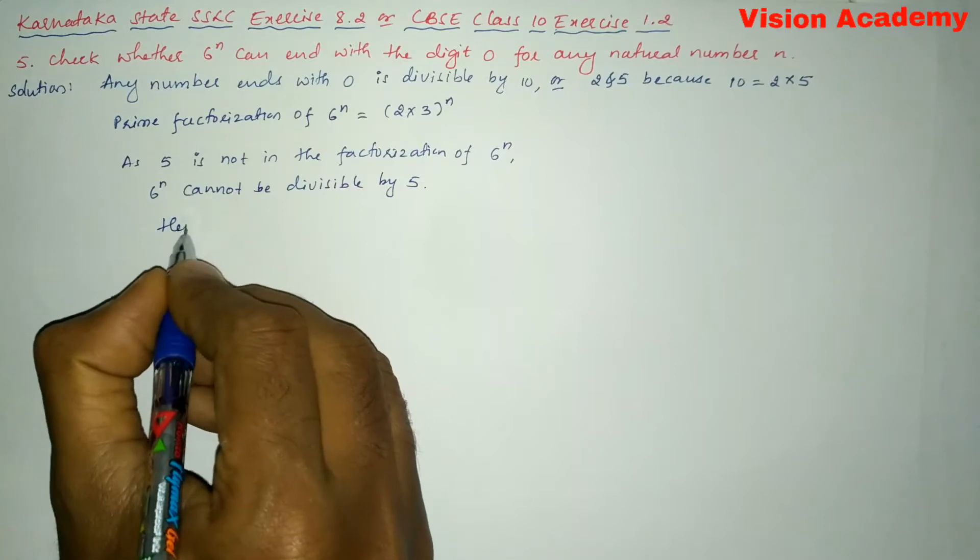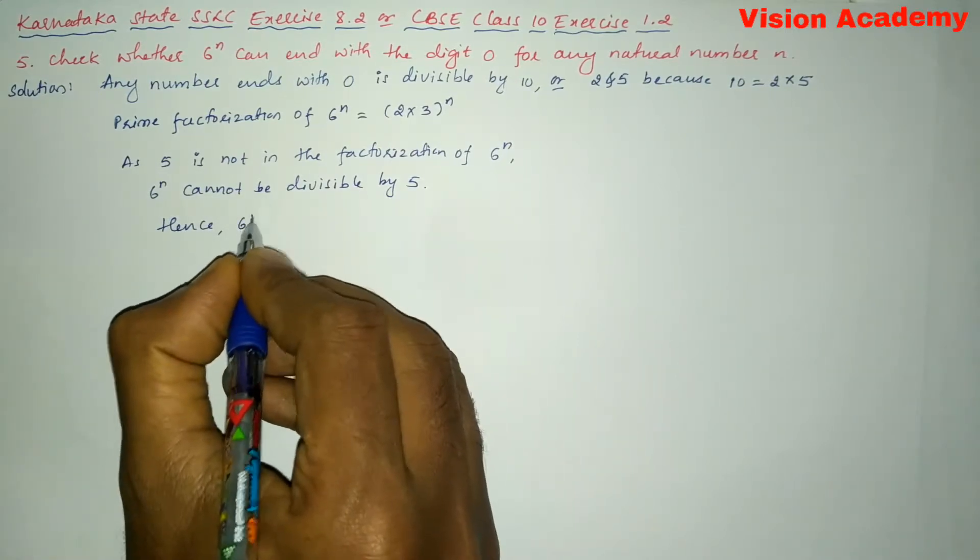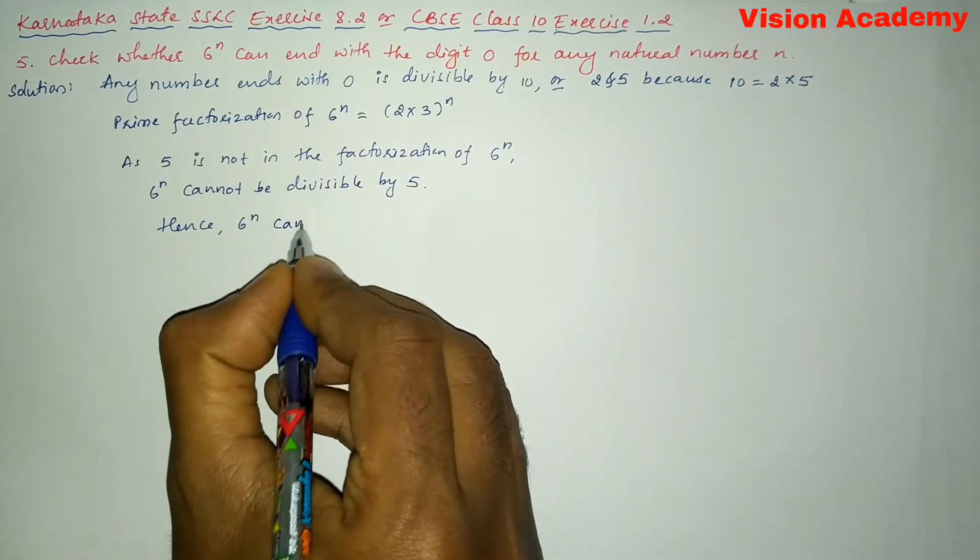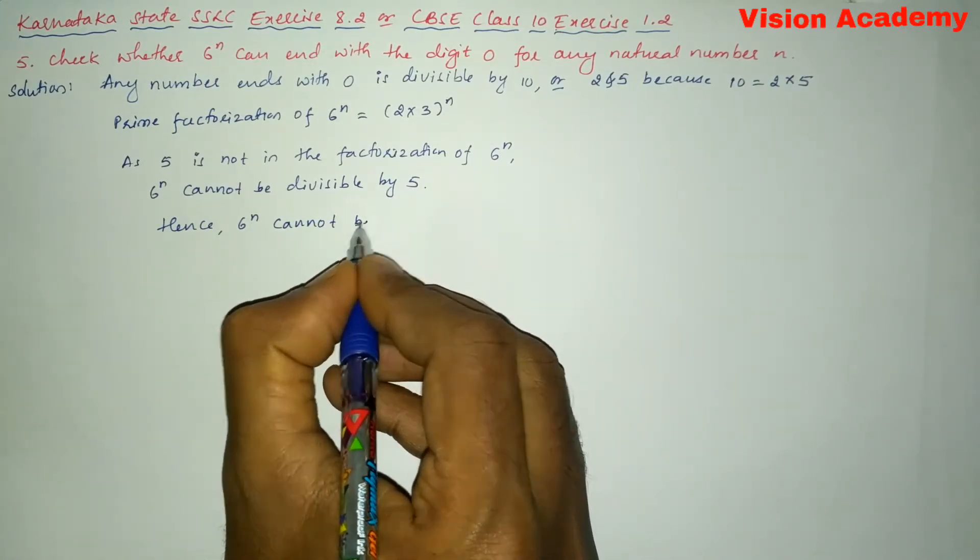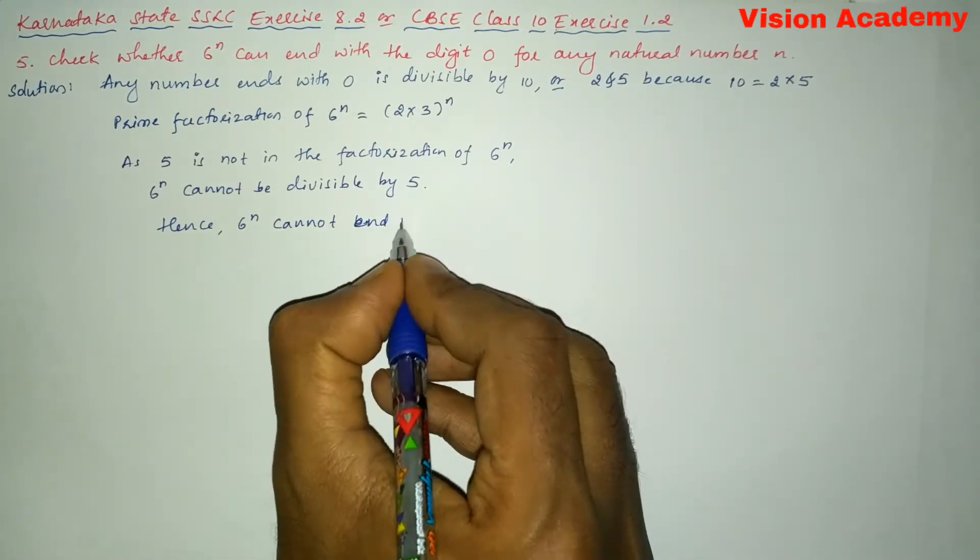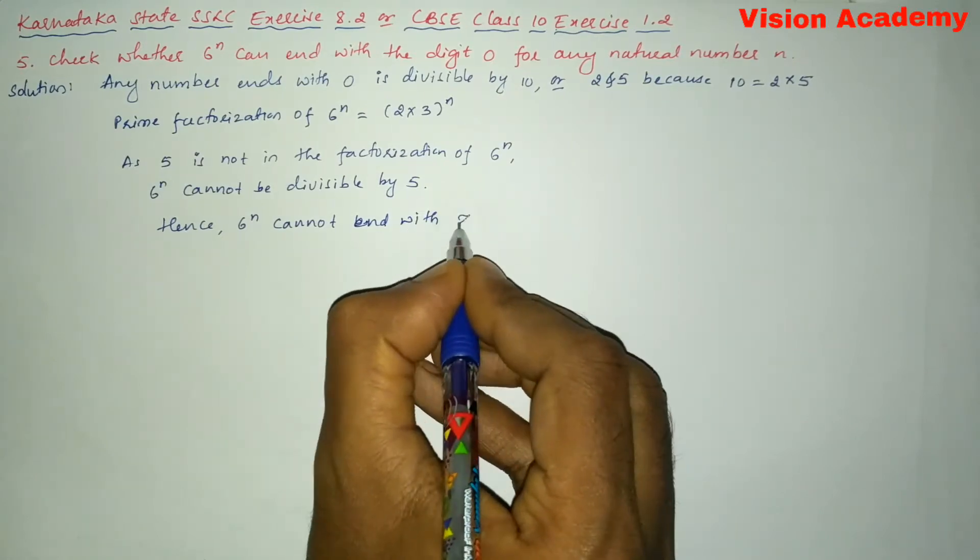Hence we can prove that 6 to the power n cannot end with 0.